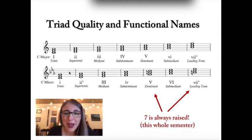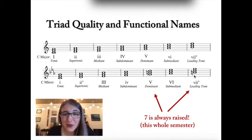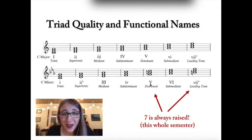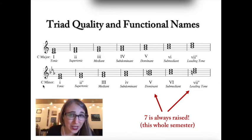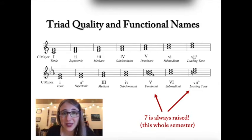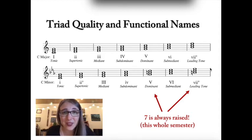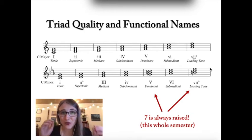What's special about the minor key is there's an accidental on the 5 and 7 chords. For our purposes, the dominant and leading tone chord in minor — you are always going to raise scale degree 7. In the key of C minor, the 7th scale degree is B, so instead of B-flat from the key signature, it becomes B-natural in the 5 and 7 chord. We'll talk about why when we get to harmony.